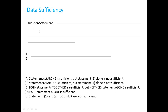If by statement one I am able to solve the question, then only option choices A and D can be the answer. A says statement one alone is sufficient but statement two alone is not; D says each statement alone is sufficient. We call this the AD and BCE approach. If by statement one you are able to answer the question, you are left with A and D. If by statement one you are not able to answer the question, you are left with three answer choices: B, C, and E.